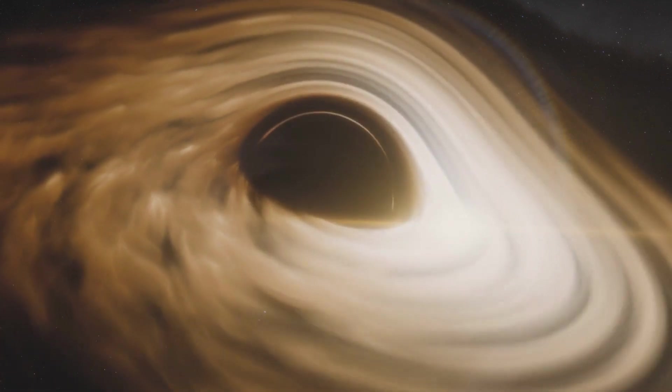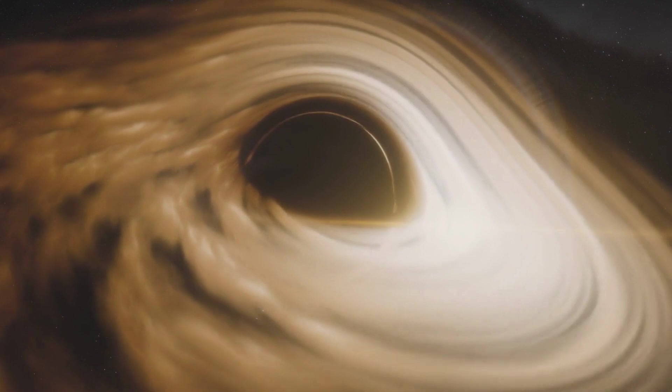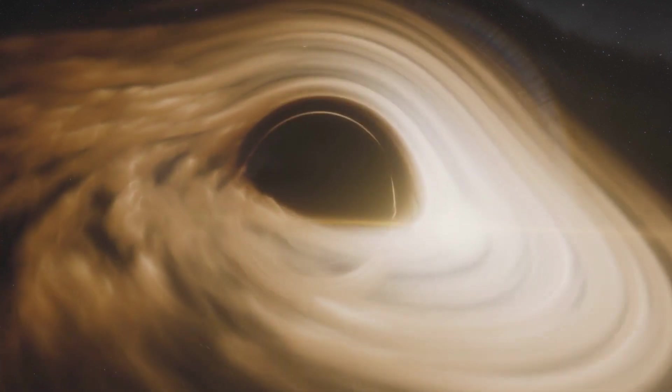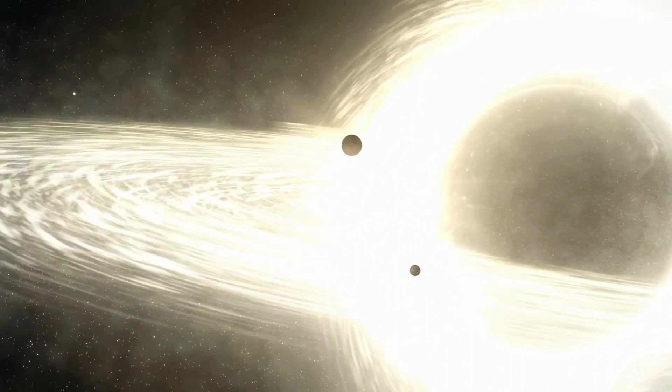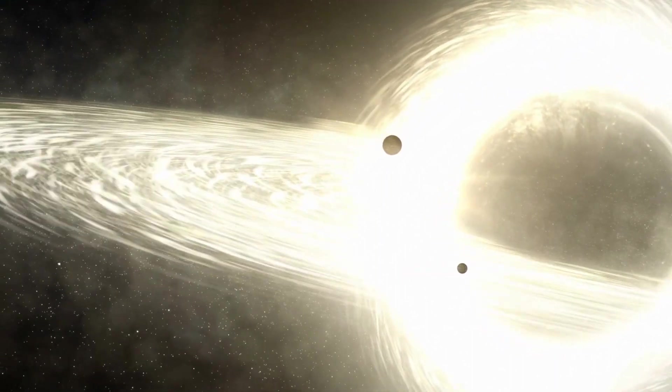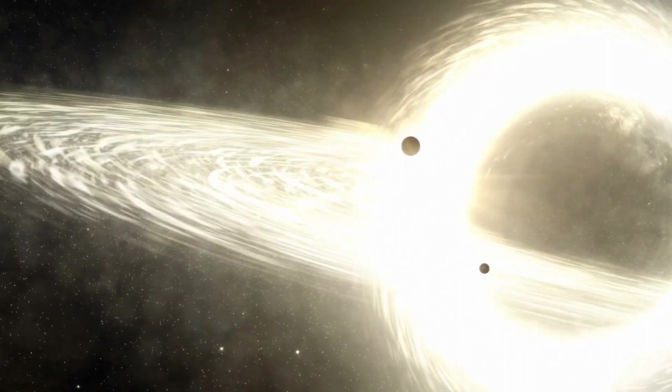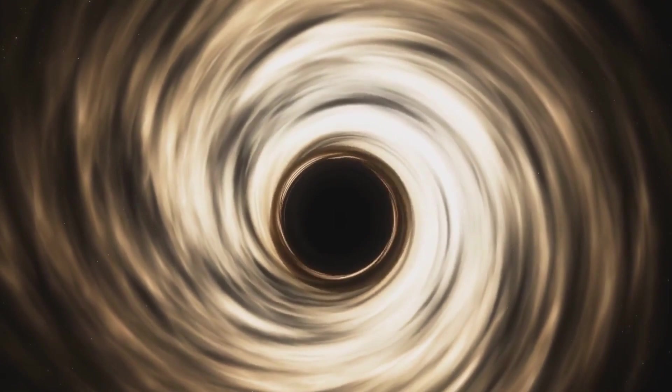Surrounding this singularity is the event horizon, a boundary not of matter, but of possibility. Beyond this point, nothing, not even light, can escape the black hole's gravitational pull, hence the name, black hole. The event horizon is like the point of no return, marking the threshold between the known universe and the enigmatic heart of a black hole.